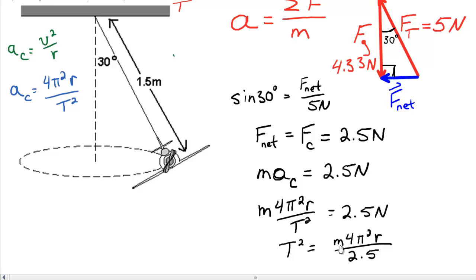So T squared is M times 4 times pi squared times r over 2.5. Now we know the mass from the previous question was 0.44 kilograms. 4 pi squared we can easily figure out in our calculator. We know the bottom is 2.5. Our only unknown is this r, the radius of the circle. So there's one more step and that's just to simply solve for what r is equivalent to.